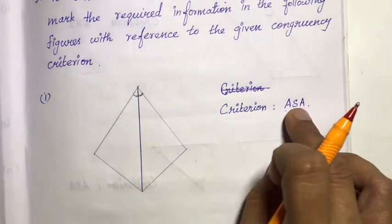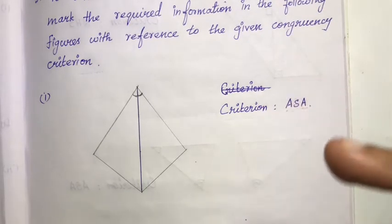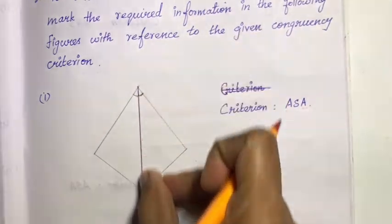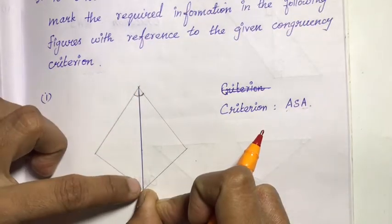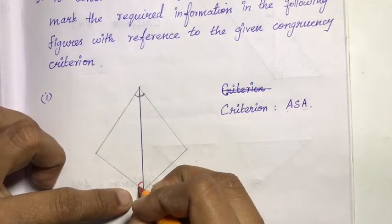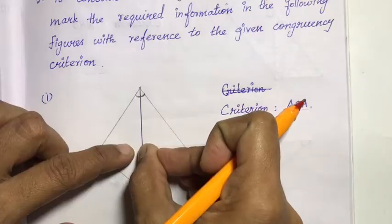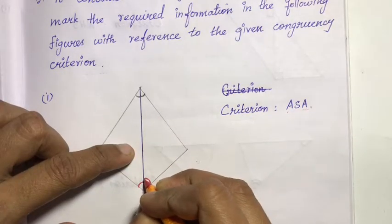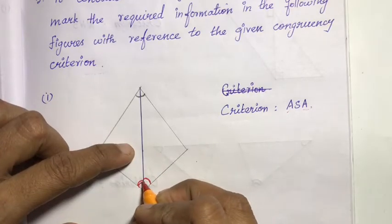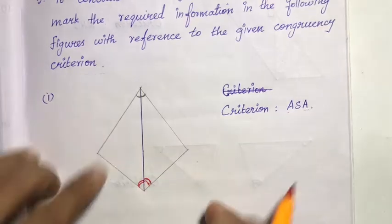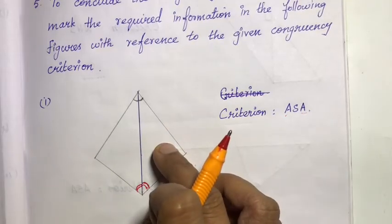For Angle-Side-Angle, the side here is the included side — that is, the side between the two angles. So these two angles are equal, and we mark them accordingly. So it is marked as per the ASA criteria, and the two triangles are congruent.